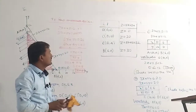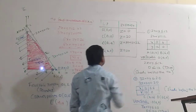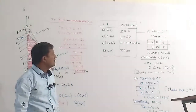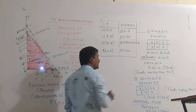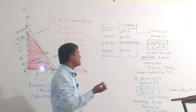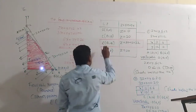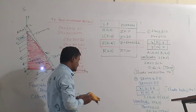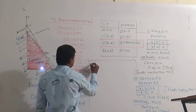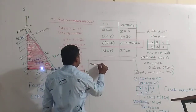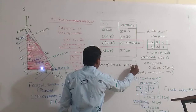Out of all these values — 0, 30, 32, and 30 — the maximum is 32. So the maximum of Z = 32 at point E(4, 4). Here x = 4 and y = 4, meaning to get the maximum profit of 32 rupees, the industry should manufacture 4 pedestal lamps and 4 wooden shades.